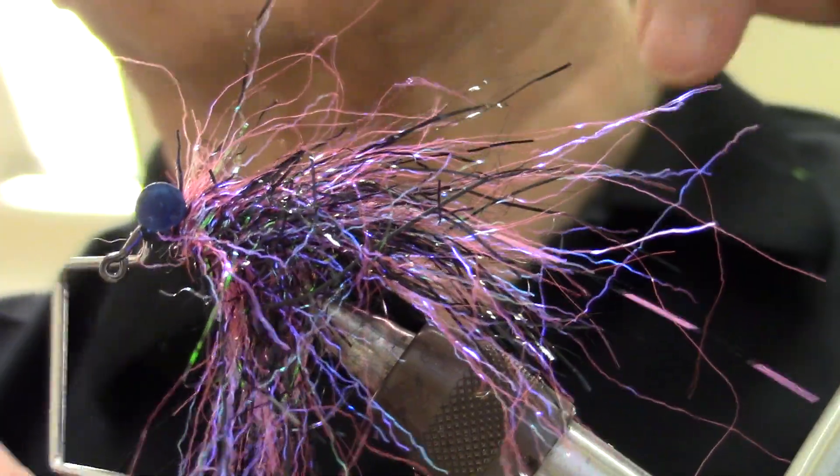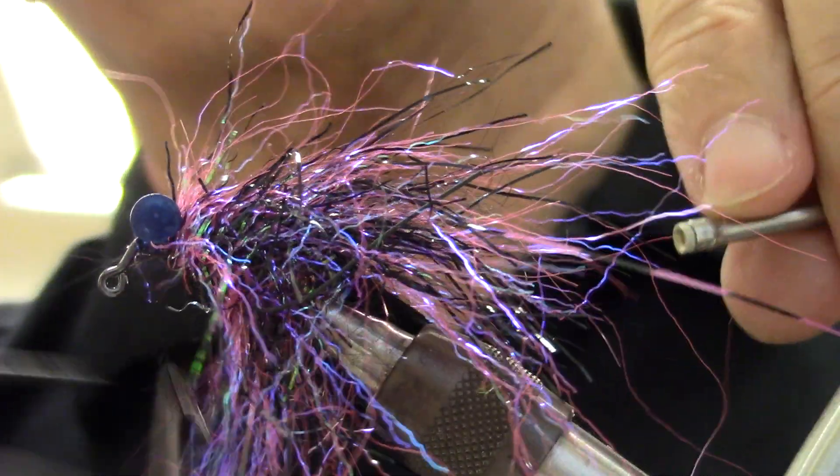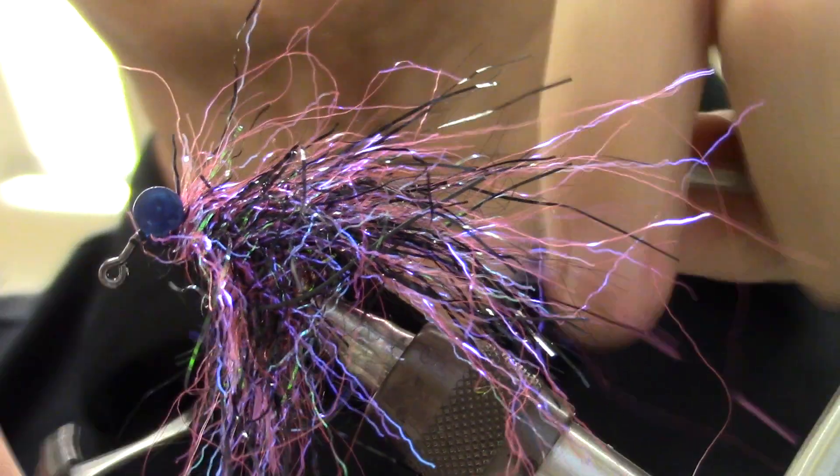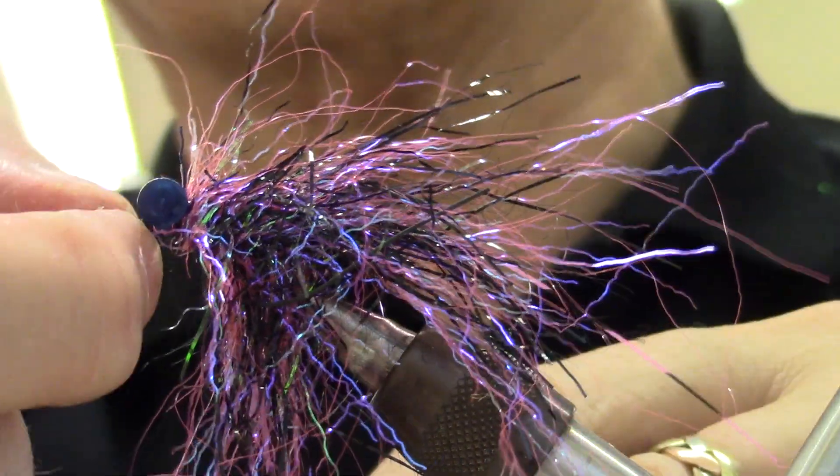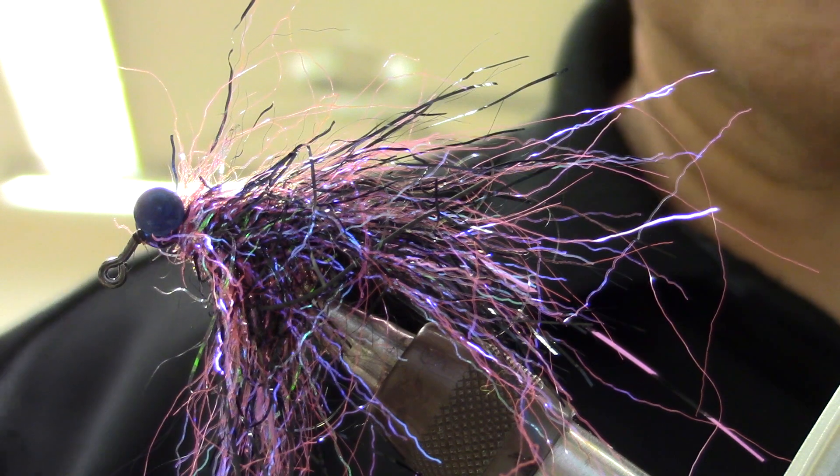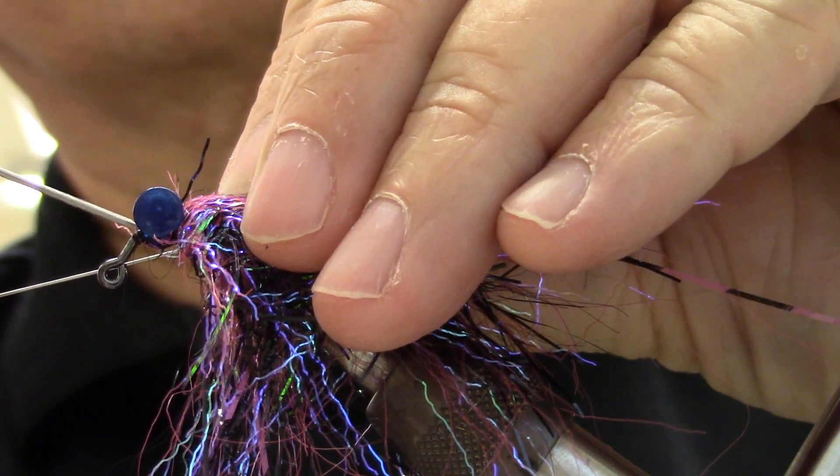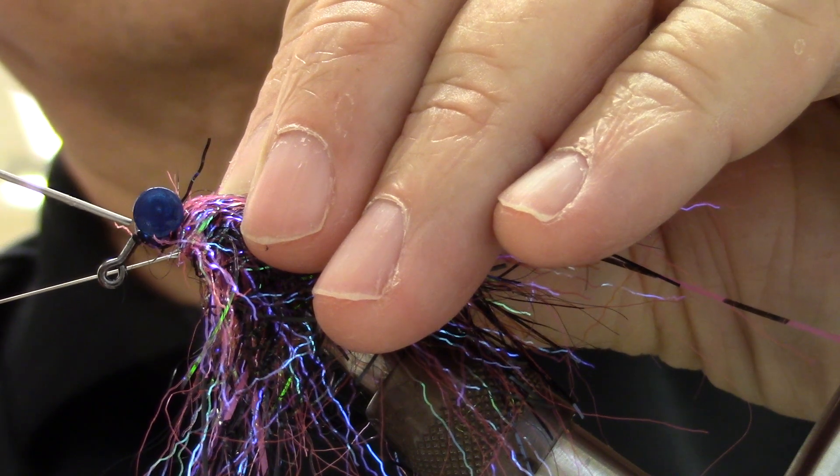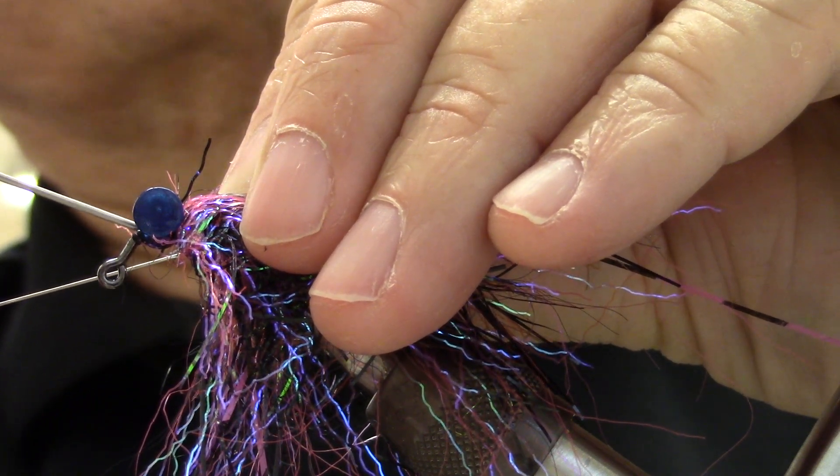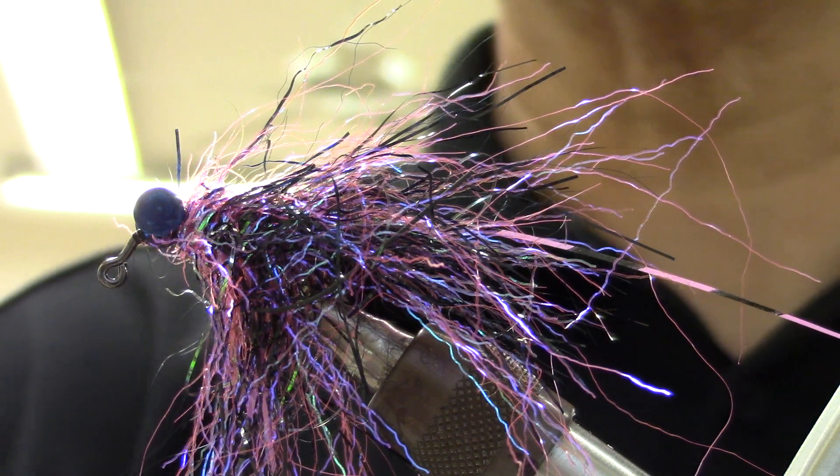And if you've watched enough of my videos, you know, I always do a double whip finish. This is something I learned from John Romer. And it's a great tip. Put a little bit of glue in there. Okay. My glue doesn't want to behave. I'll glue it later.